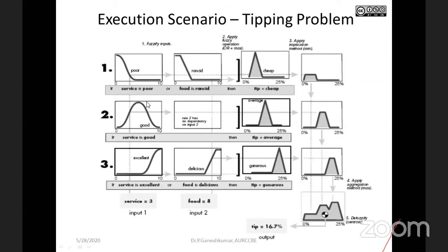Now let me explain how the inference engine works out. When the inference engine gets executed after receiving input from the customer — say the customer fed 3 for service and 8 for food — these three rules have to be simultaneously verified for service equal to 3 and food equal to 8. When service equals 3, there is a vertical line that cuts the excellent membership at 0, the good membership somewhere near 1, and the poor membership somewhere above 0. For food equal to 8, it cuts in the delicious membership somewhere near 1.